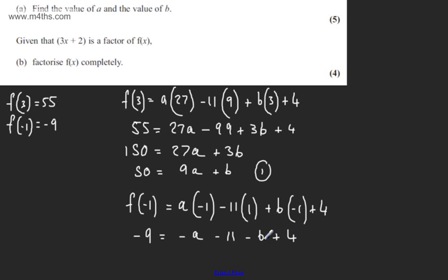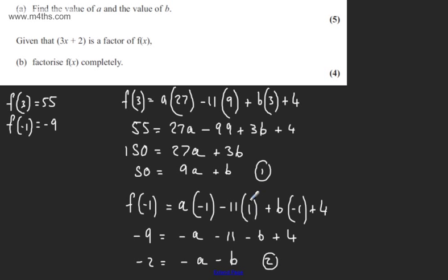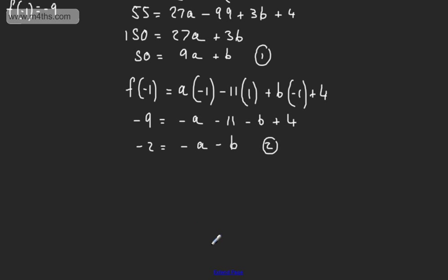Rewriting this out, we have minus 9 is equal to minus a minus 11 minus b plus 4. From here we can see that minus 2 is equal to minus a minus b. I'm going to call this equation 2, simply setting up simultaneous equations to solve.